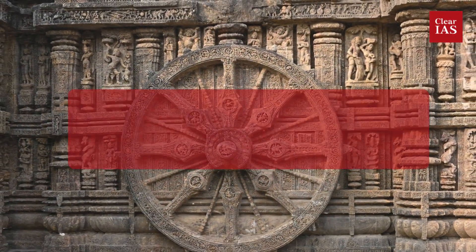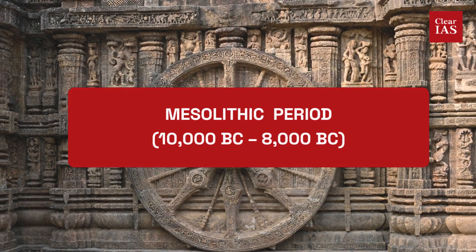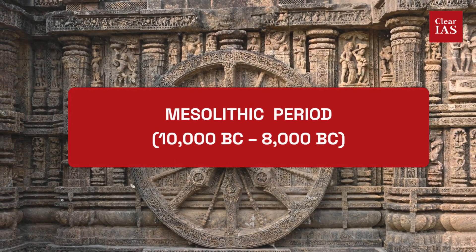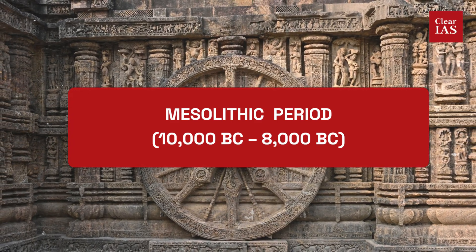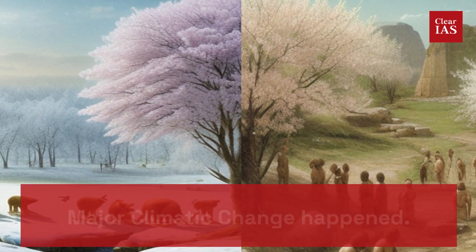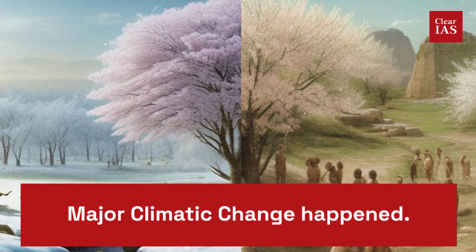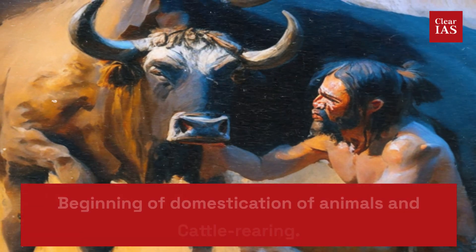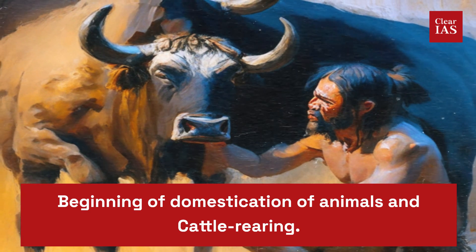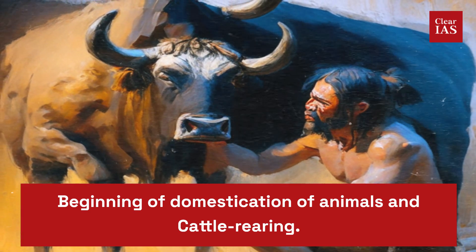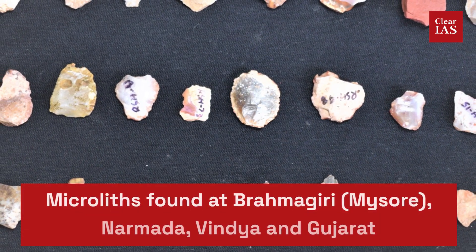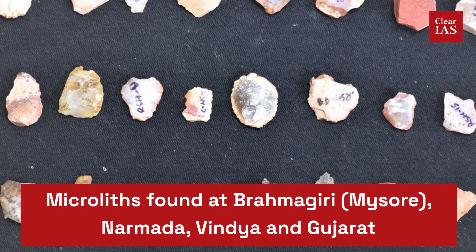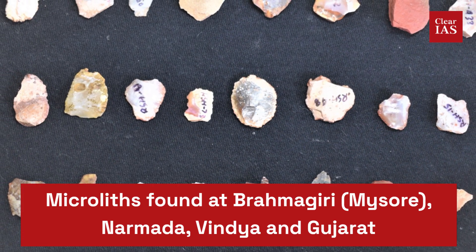Moving forward, let us look at the Mesolithic period, starting from 10,000 BC to 8,000 BC. There was a major climatic change that happened during this period. This era also marked the beginning of domestication of animals and cattle rearing. Microliths found at Brahmagiri, Narmada, Vindhya, and Gujarat belong to this time period.